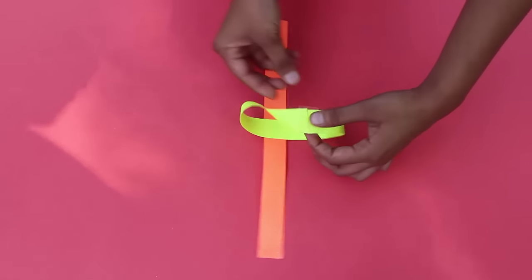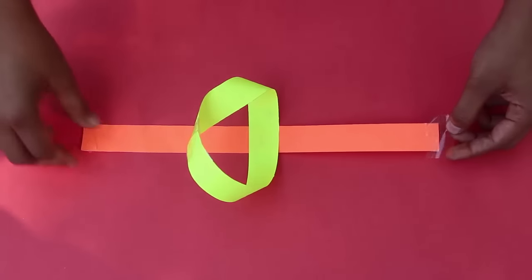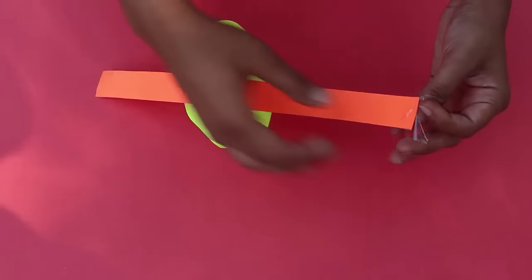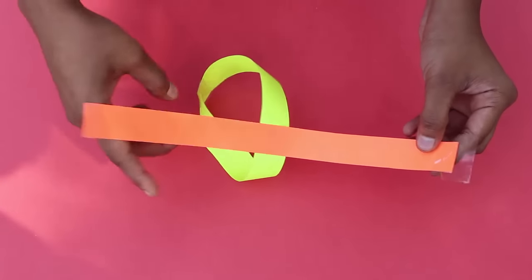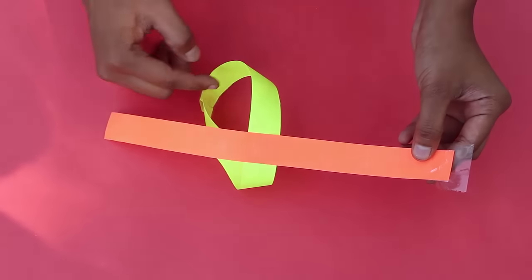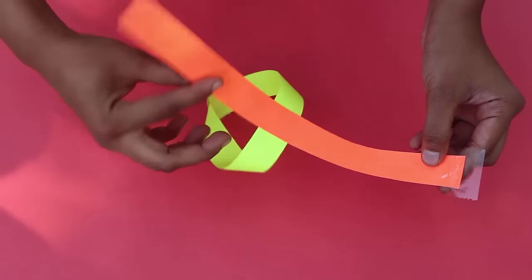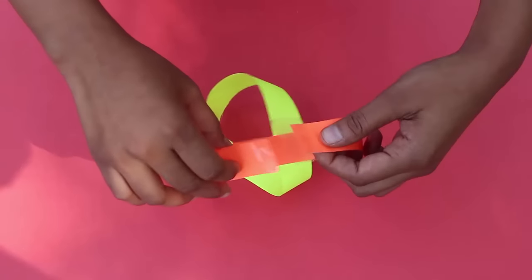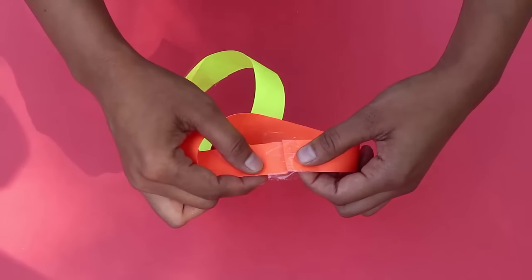So the yellow strip is stuck together after giving it a twist in the clockwise direction. Similarly, stick the two ends of the red strip, but this time give the red strip a twist in the anti-clockwise direction.